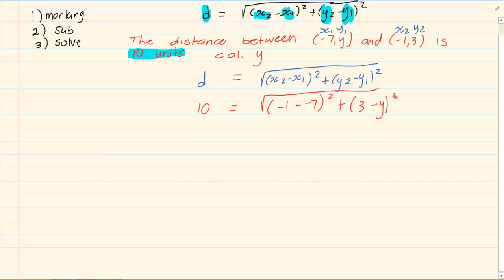Now at this point you must be careful with your algebra. To get rid of a root we are going to square. And what we do on one side we are going to do on the other side. So I am going to square the 10, which gives us 100 equals, now minus 1 plus 7 all squared plus 3 minus y all squared.